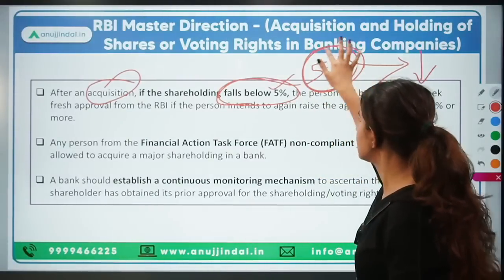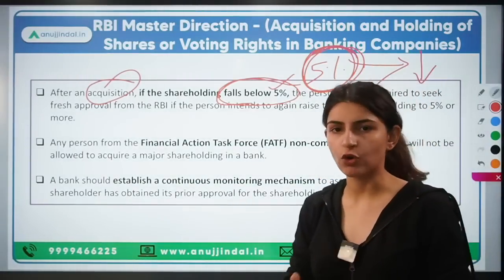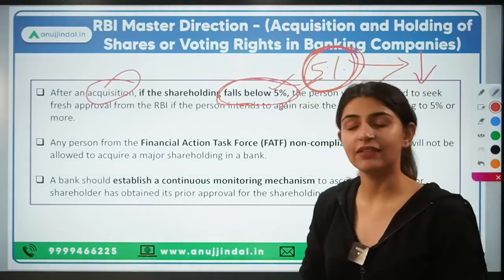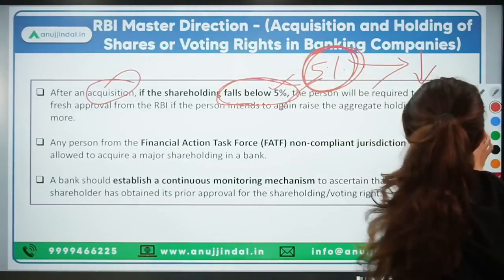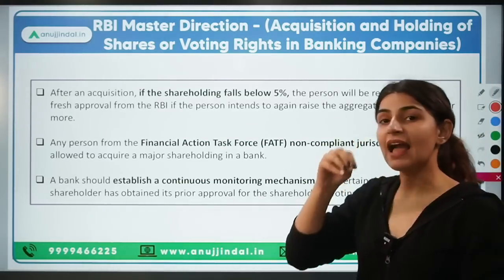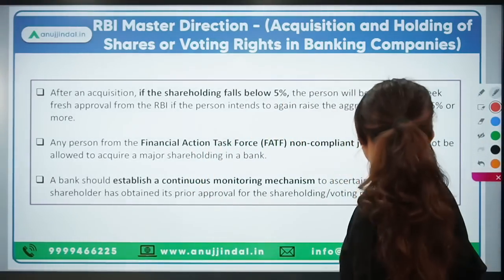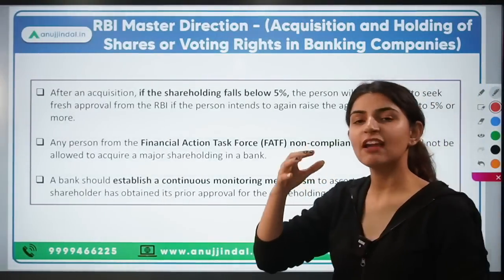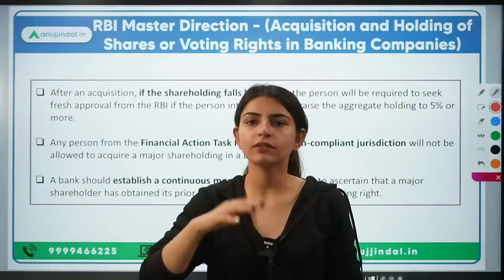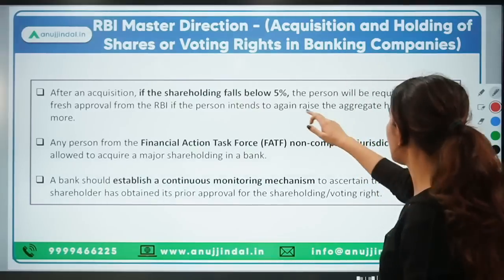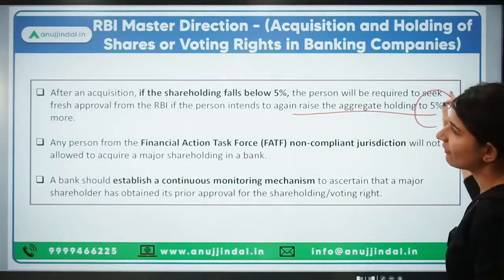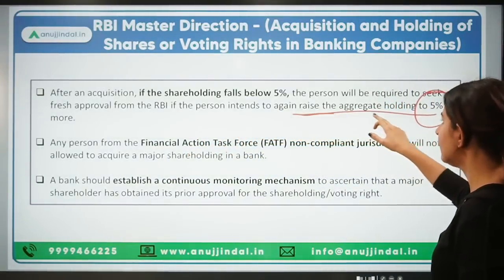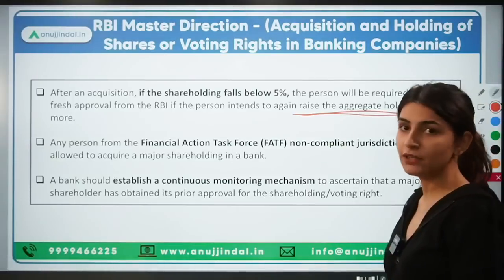There are a lot of frauds in banks, and RBI wants to keep a check on everybody having a major shareholding. RBI wants to monitor everything. That is why RBI has said that if someone's shareholding falls below 5% and they want to raise it back to 5% or more in future, they again have to give a fresh application to RBI for approval.